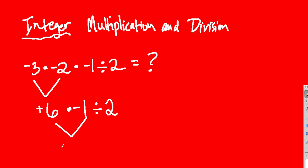So 6 times negative 1: a positive number times a negative is negative 6. Now we have our last step — negative 6 divided by positive 2. A negative divided by a positive is a negative, so it's negative 3.